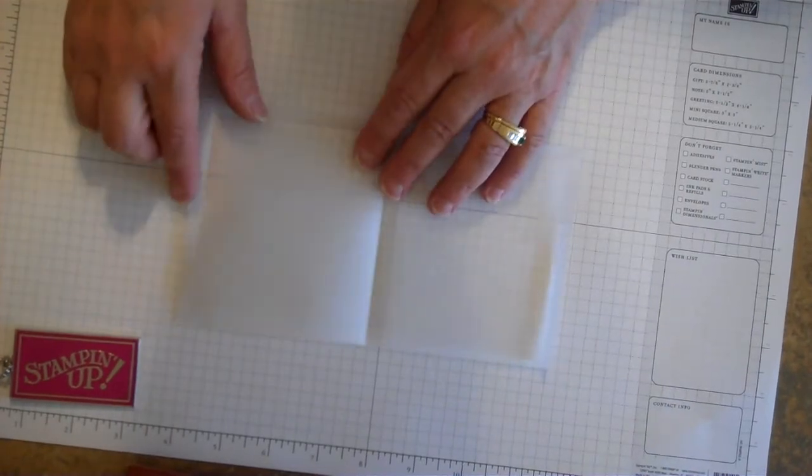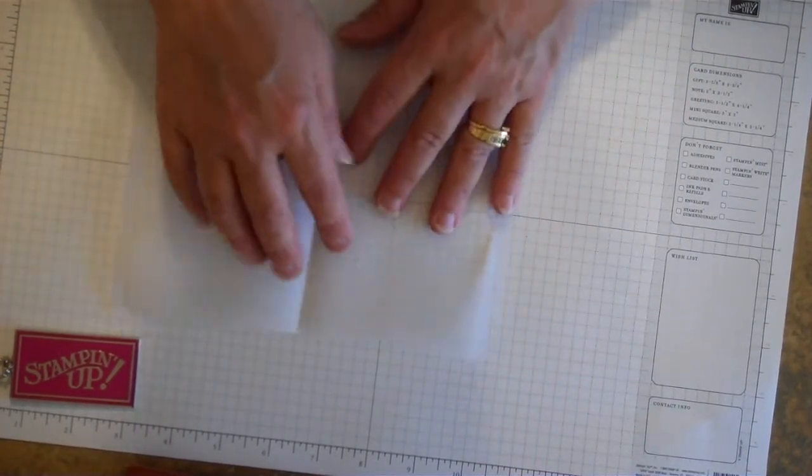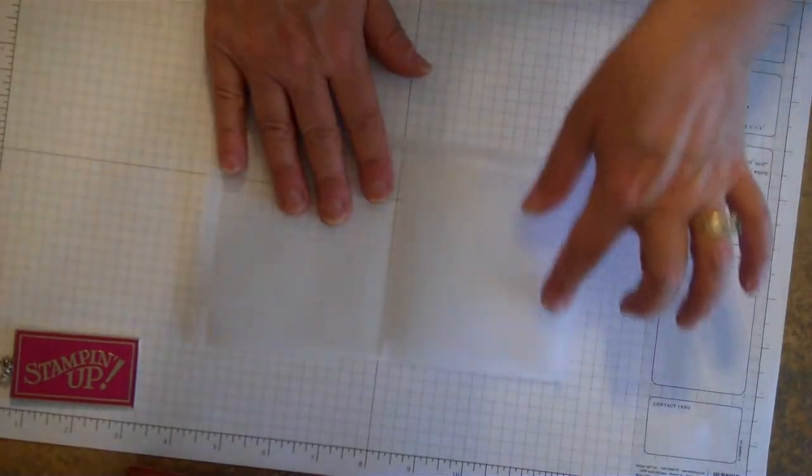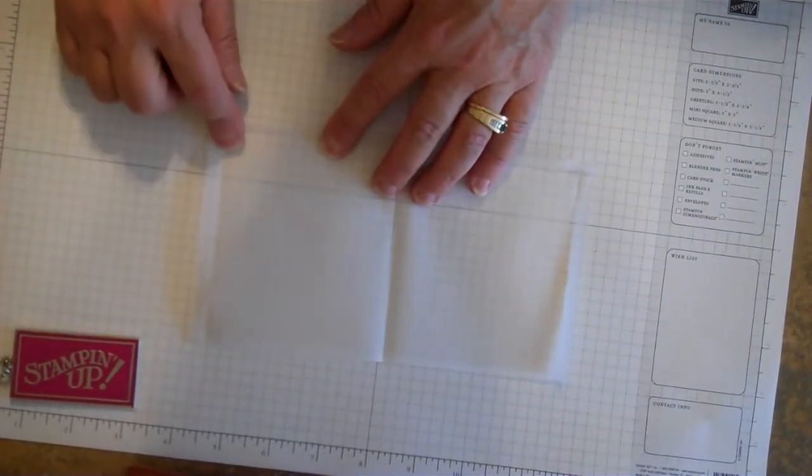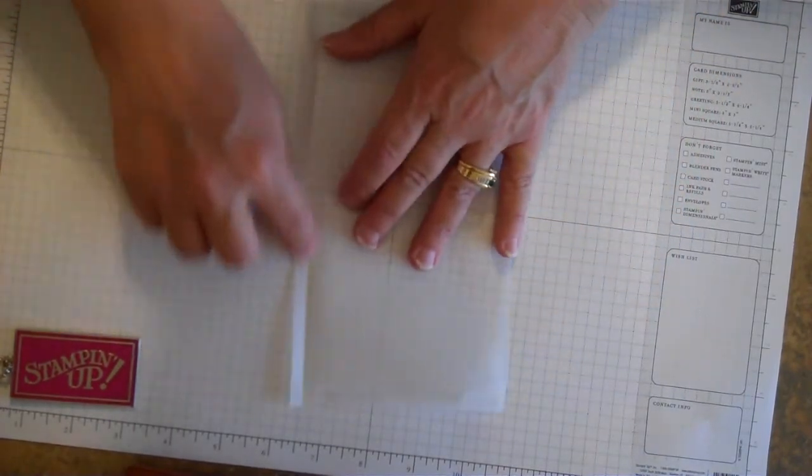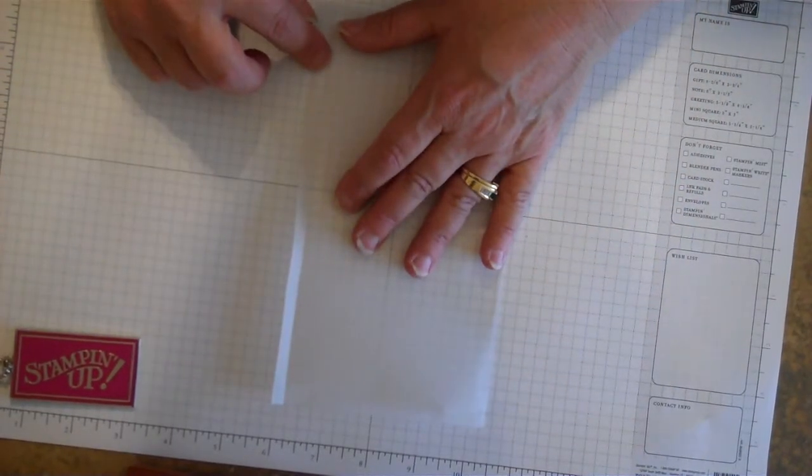You're also going to score again at the quarter inch mark on this end and the quarter inch mark on this end and score at the bottom or the one long side at a quarter inch again.